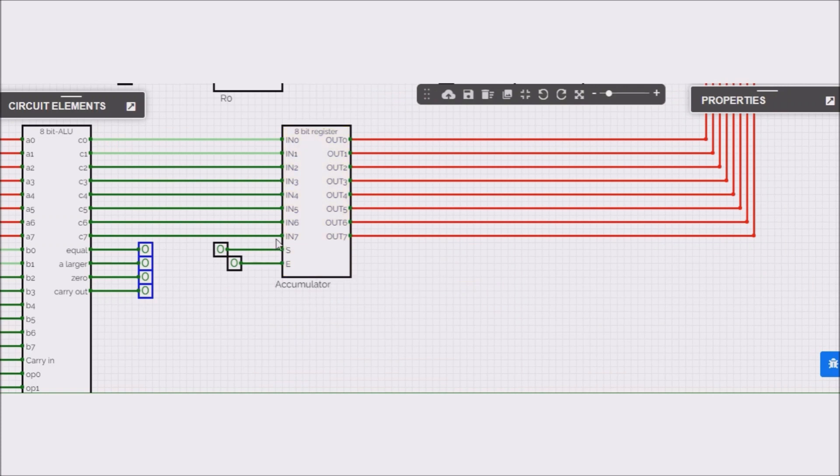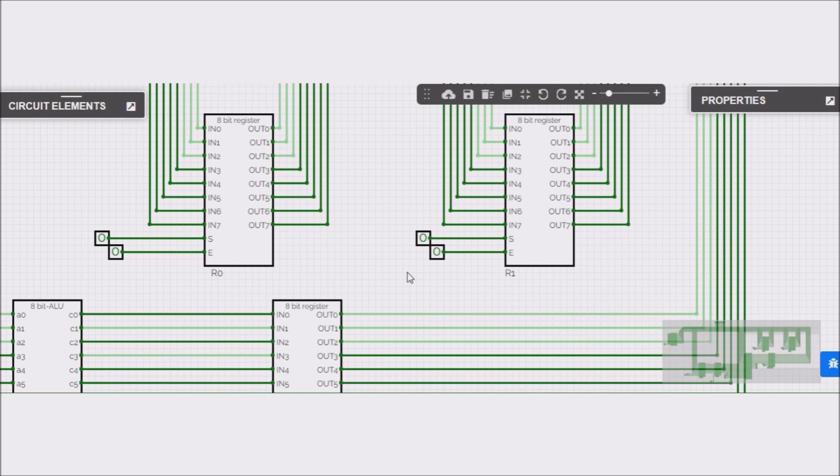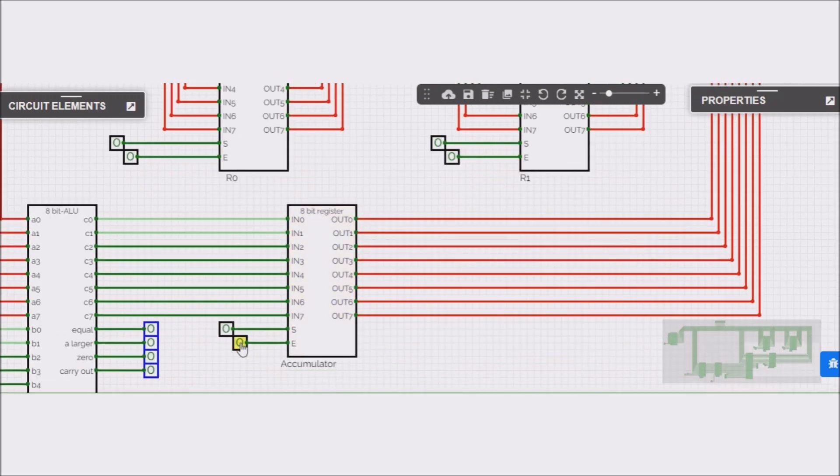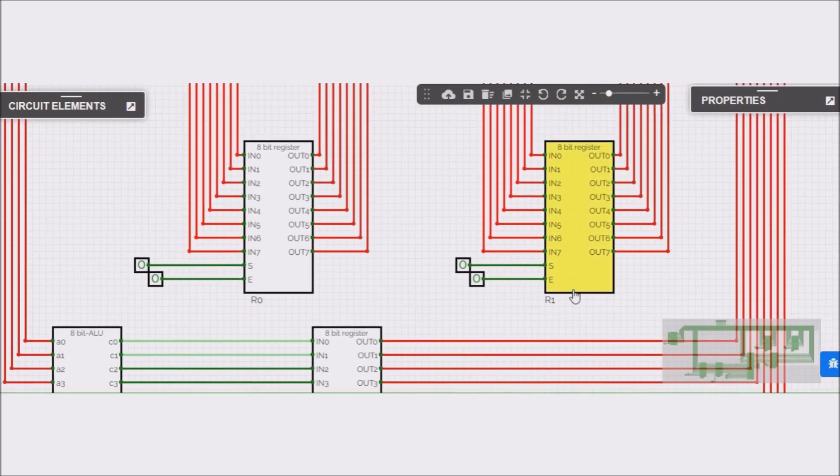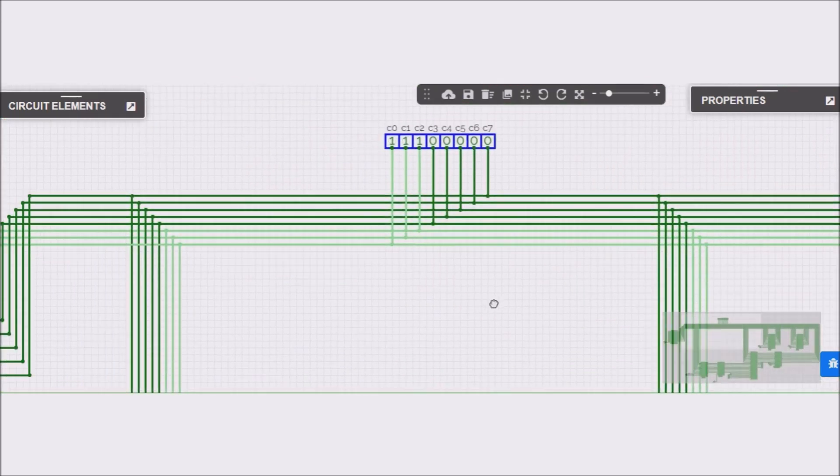We have to store the result in the R1 register. So, we put on the bus the accumulator content and we acquire it giving a set pulse. Now we free the bus and now we should have our result, the number 7, inside R1 register. We can put on the bus the content of R1 and going to read the content of the bus.